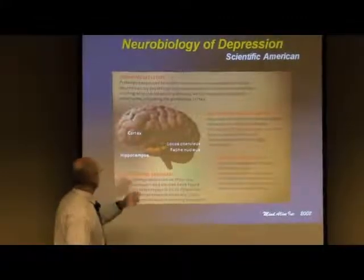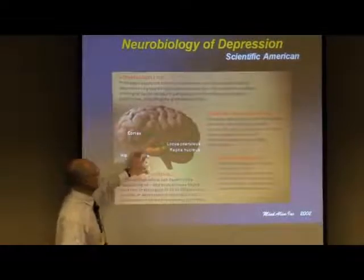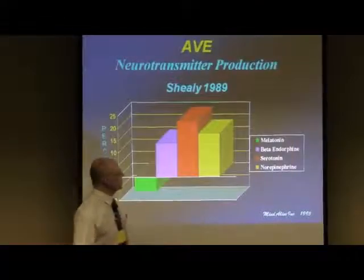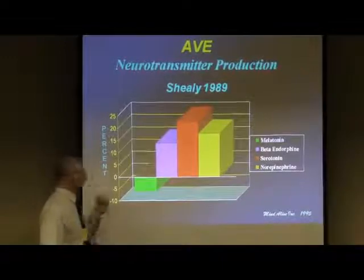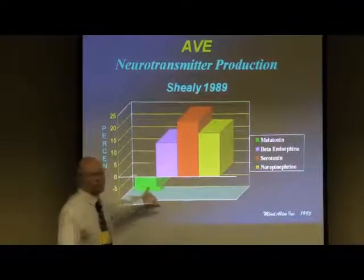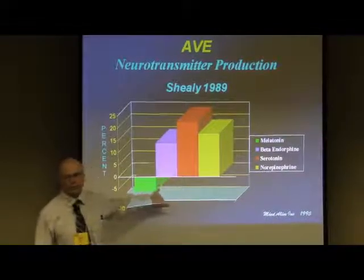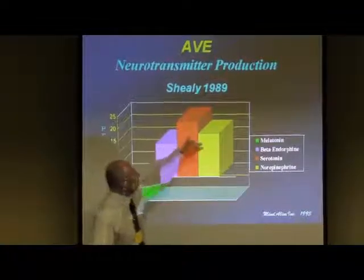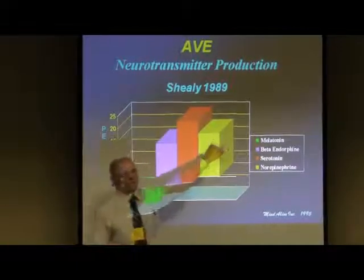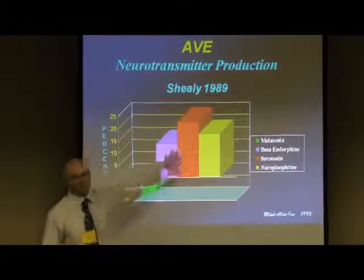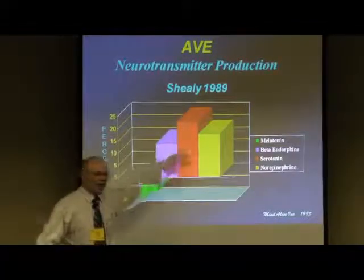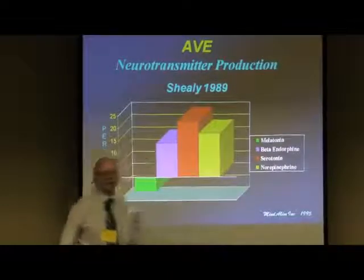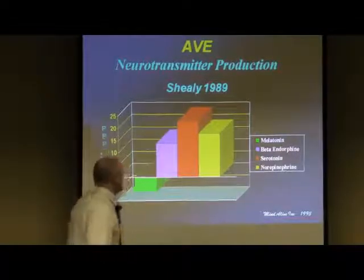Depression is another thing this technology lends itself well to. Depression involves norepinephrine depletion, serotonin depletion, hippocampal shrinkage, and dopamine depletion. Here's a study done by Shealy in 1989: daytime melatonin dropped 6% — melatonin is associated with SAD. Endorphins went up 13%, serotonin went up 23%, and norepinephrine went up 18%. This is really critical for fighting depression. I call it the Christmas signature — when serotonin and norepinephrine go up, they're correlated with happiness, peace, and feeling safe.